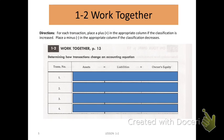In the work together, which the instructions are found in your textbook on page 13, it tells us that for each transaction, place a plus symbol in the appropriate column if the classification is increased, or a minus in the appropriate column if the classification decreases. Look at your textbook on page 13, as we're about to look at a total of four separate transactions.